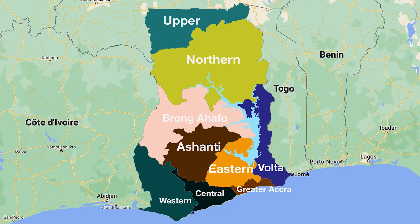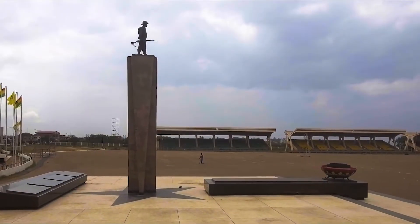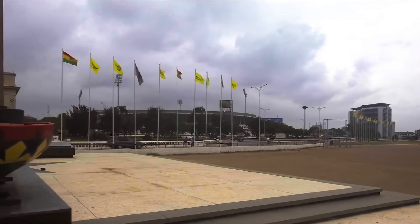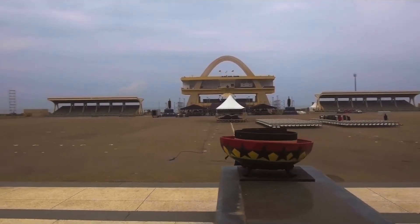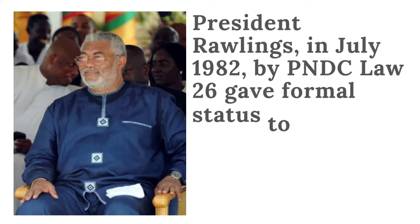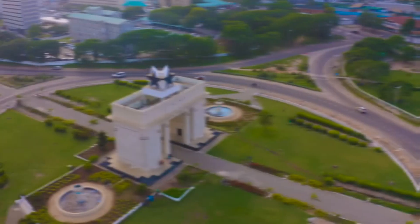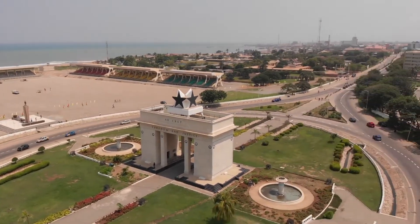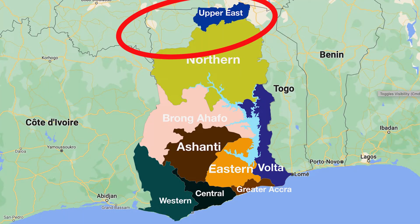The history of the Greater Accra region is interesting. For many years it was part of the Eastern region and referred to as the Accra Capital District. It was administered separately from the other parts of the Eastern region, and the Minister of Local Government was responsible for its administration. President Rawlings, in July 1982 by PNDC Law 26, gave formal status to the Greater Accra region, which he created out of the Eastern region, bringing the number of regions to nine.